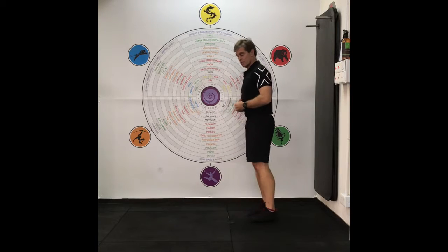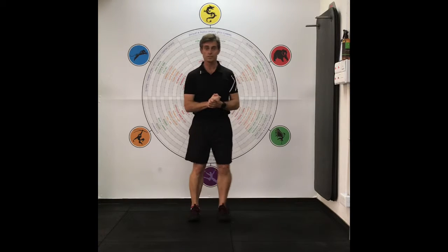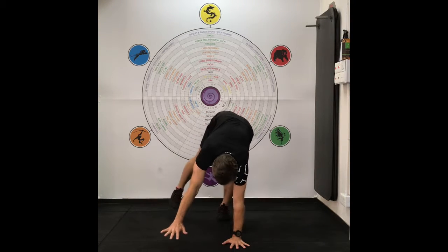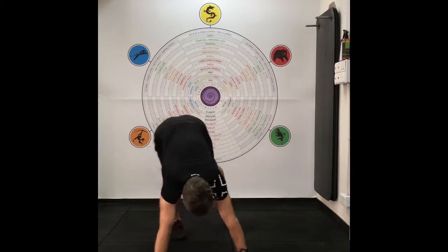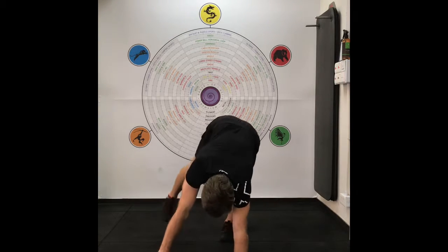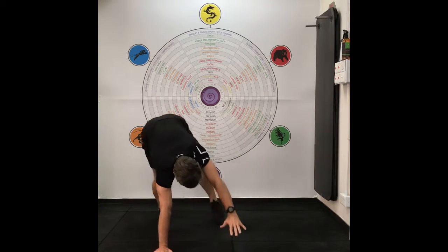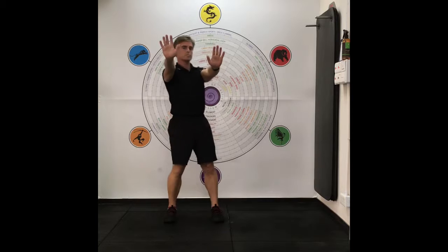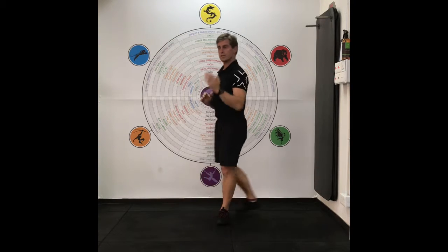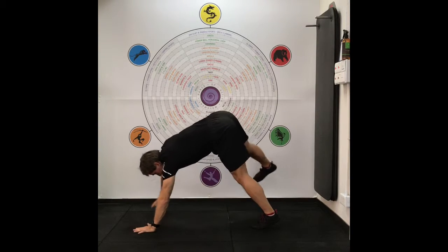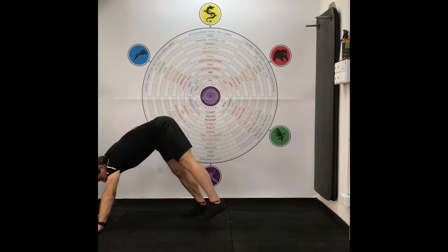The bear crawl starts from the downward dog position, moving straight arm and straight leg at the same time. Into the downward dog, I move side, side, side, side — and then backwards as well. This is called ipsilateral lateral movement, moving side to side, and from the side view it's forward and then back.